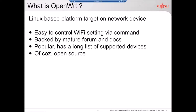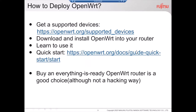First, what is OpenWRT? What is the wireless OpenWRT inside the wireless router? OpenWRT is an open source operating system. It is designed to be easy to control Wi-Fi settings using a shell script. We can use the official documentation to find help to configure OpenWRT. OpenWRT is very popular and has support for a lot of devices. Of course, it is open source.